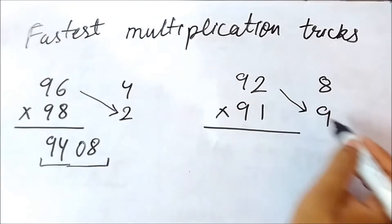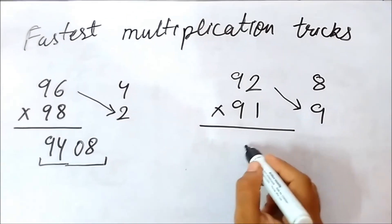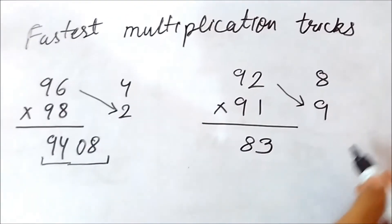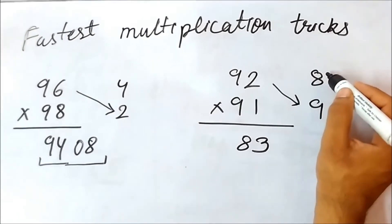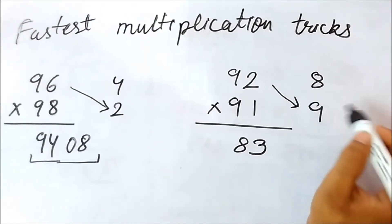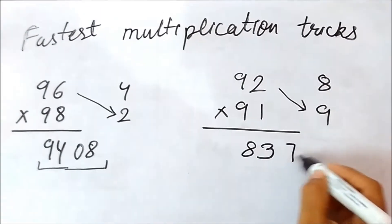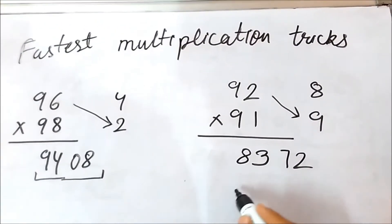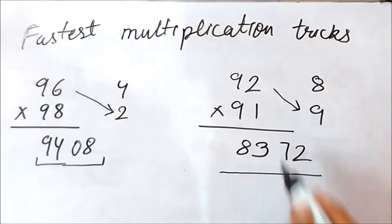So subtract diagonally, 92 minus 9 will be equal to 83. These are the first two digits. And the next two digits will be multiply 8 and 9. 8 nines are 72. So the answer is 8372 for this multiplication.